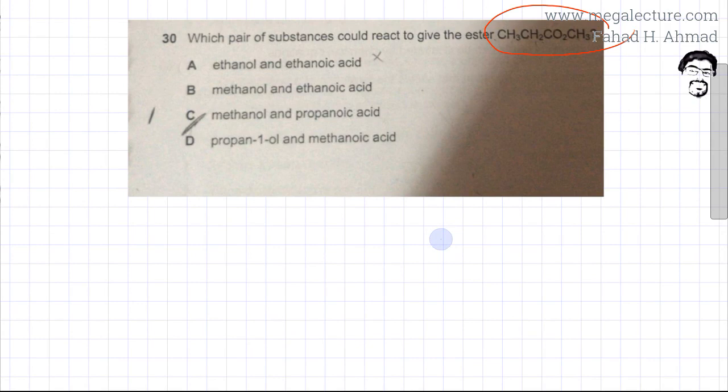So there's a CH3 group followed by a CH2 group, then there's CO2 which means there is C double bond O, then another O which is the ester link, and then you have CH3. So we have to make this ester and the question is which two of the reactants are going to add together and react in a condensation reaction to form this ester.